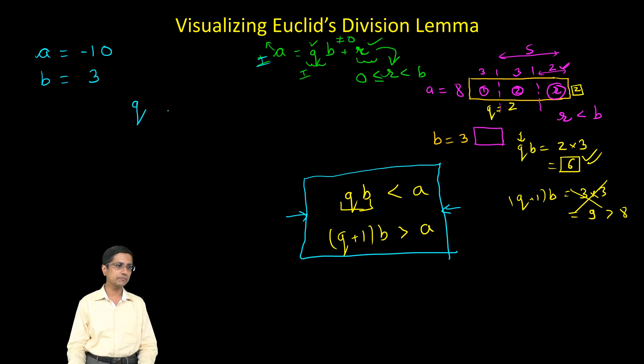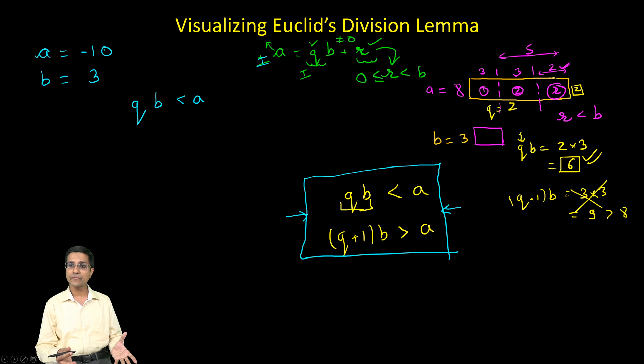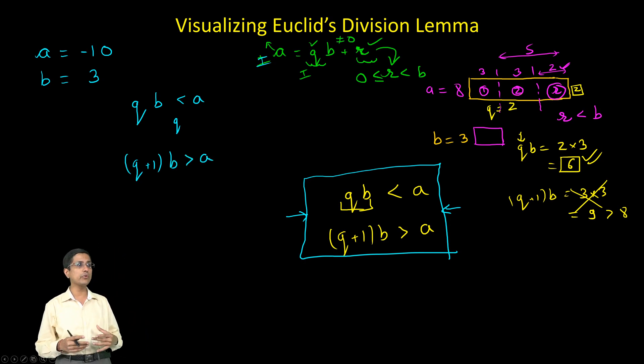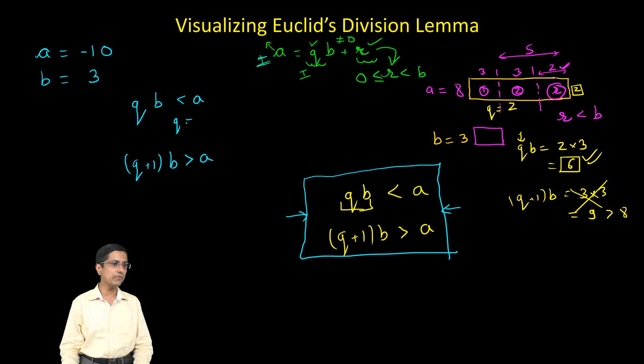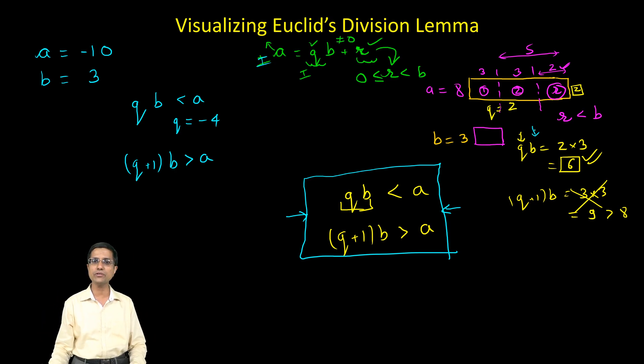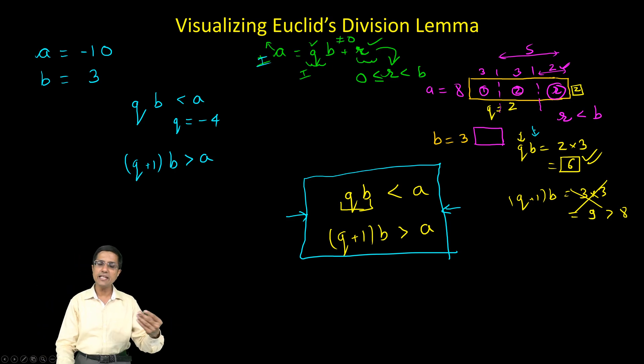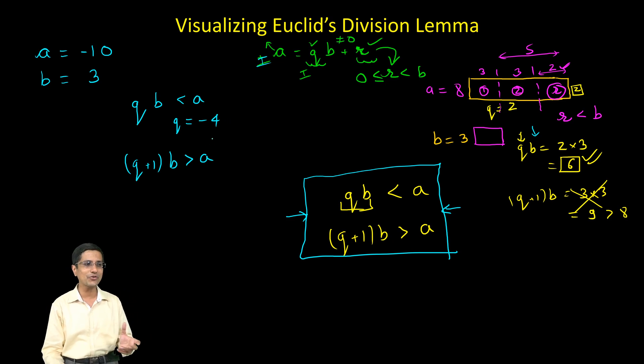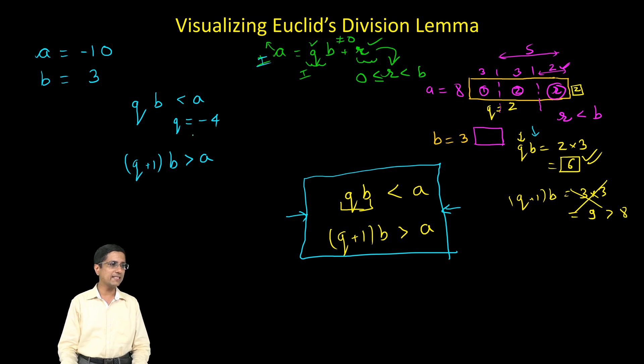Now I have to choose a value of Q such that QB is less than A. So the QB should come out to be less than A in negative terms. So I choose a value of Q and at the same time Q plus 1 into B should come out to be greater than A. So both of these should hold. So I take a value of Q equal to minus 4. Let's see what happens with this value. I will try various values just like we did in this division. Similarly here also I will start from various values and I just say that I chose the value of Q equal to minus 4 and see what happens.